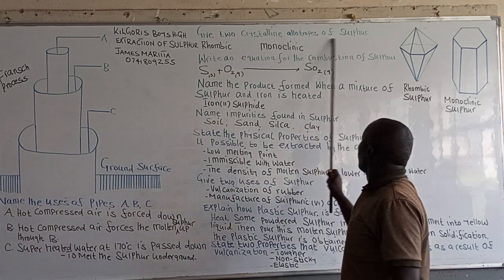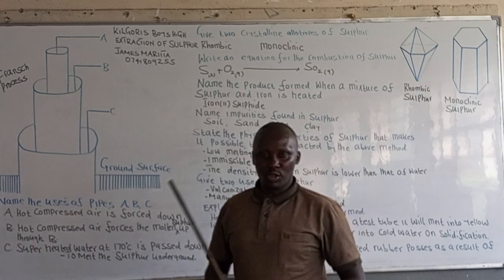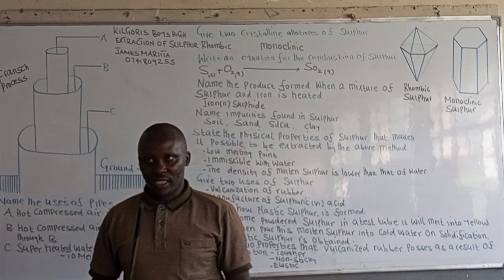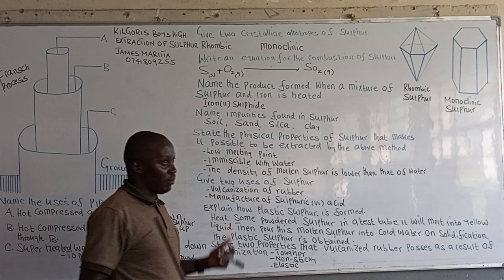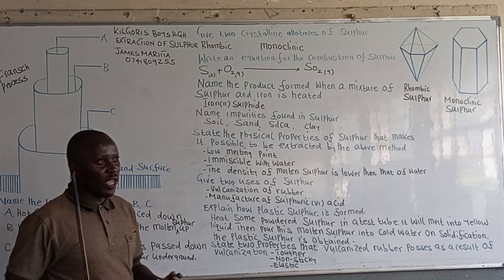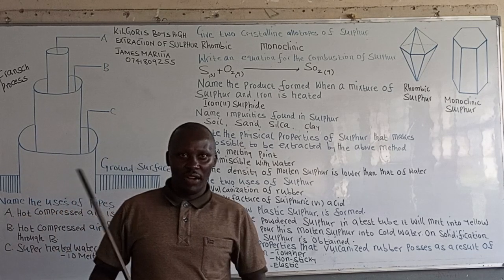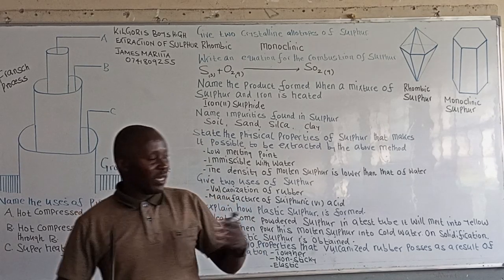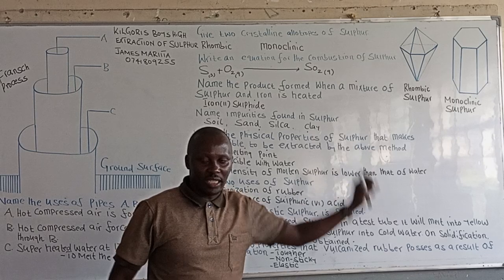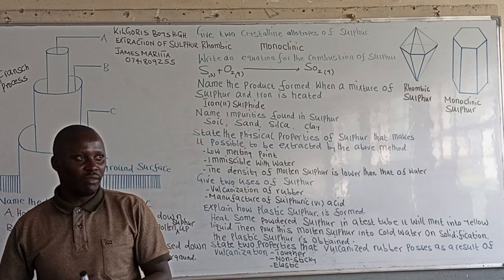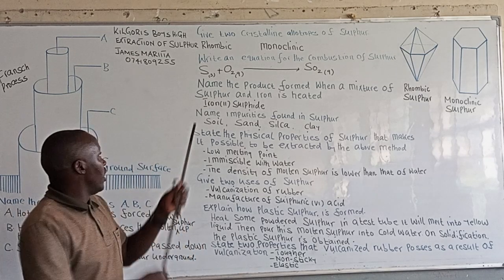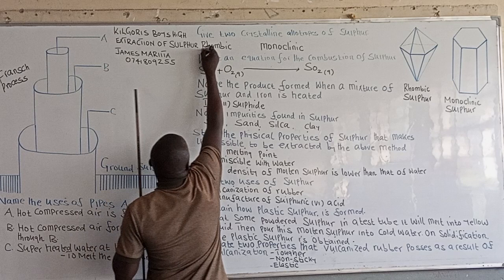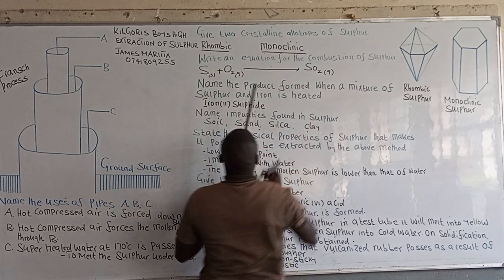Due to the crystalline forms of sulfur, there are two forms of sulfur. We have monoclinic sulfur, which is stable at a temperature above 96 degrees, and rhombic sulfur, which is stable at a temperature below 96 degrees. So there are two crystalline forms of sulfur: monoclinic sulfur and rhombic sulfur.